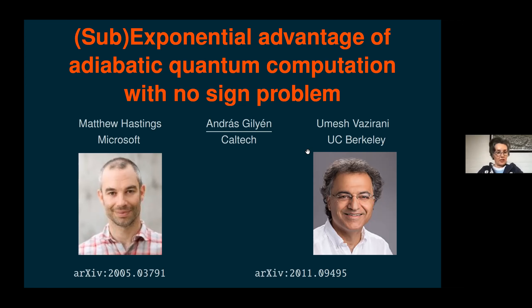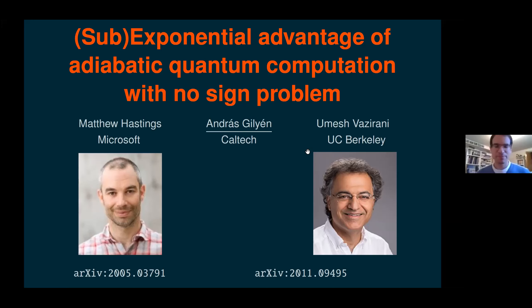I'm happy to announce our next speaker, Andras Gilyen, who will talk about a result by Matt Hastings and Umesh Vazirani: 'Sub-exponential advantage of adiabatic computation with no sign problem.' Thank you for the introduction, Barbara. This talk is about a combination of two papers, the first paper being by Matt.